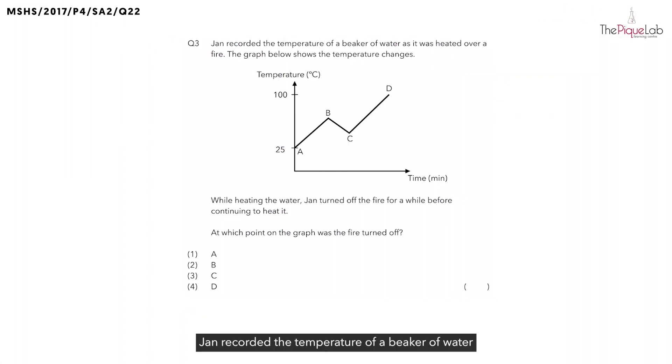Question 3. Jen recorded the temperature of a beaker of water as it was being heated over a fire and the graph below shows the temperature changes. They said while heating the water, Jen is going to turn off the fire for a while before continuing to heat it. In this question, they want us to find out at which point on the graph was the fire turned off. Let's take a look at this question carefully.